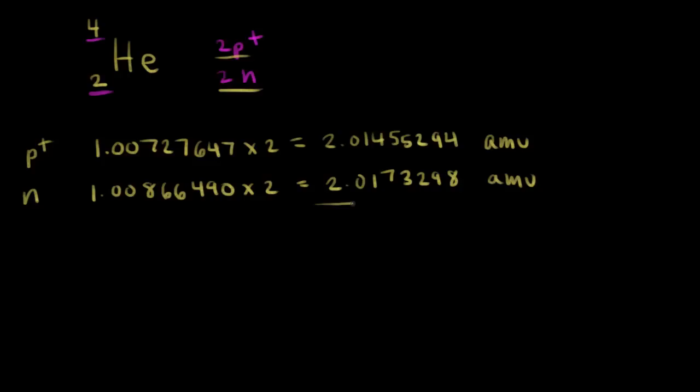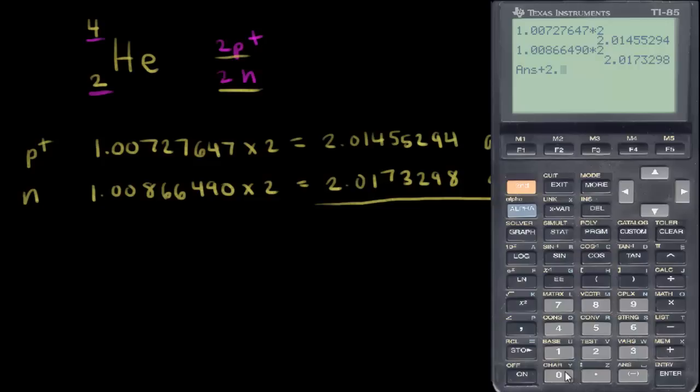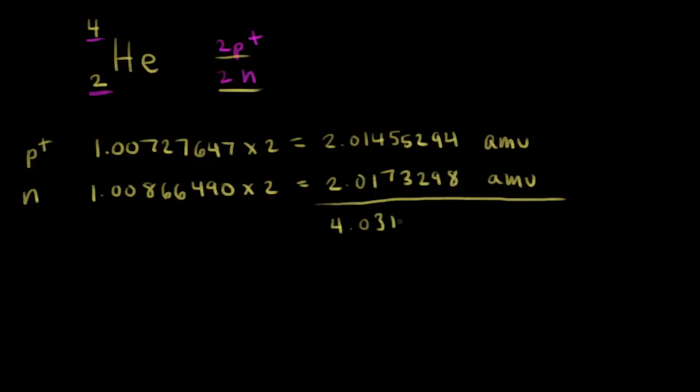So the mass of a helium nucleus — if we add those two numbers together, we should get that mass. So 2.01732980 plus 2.01455294 gives us 4.03188274 AMUs. This is the predicted mass of the helium-4 nucleus.